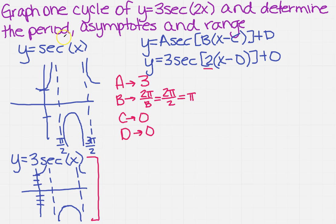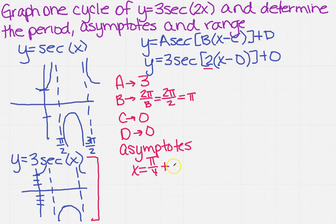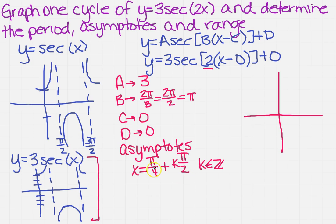Now we need the asymptotes. There's a formula for that — make sure you learn it. It's x equals pi over 4 plus k times pi over 2, for any integer k. So if k equals 0, we get a vertical asymptote at pi over 4. If k equals 1, we get one at 3 pi over 4. Make sure you label those on the graph.